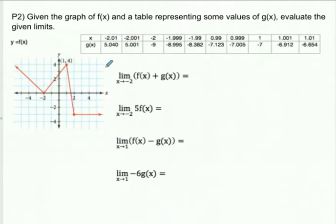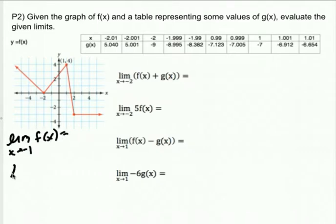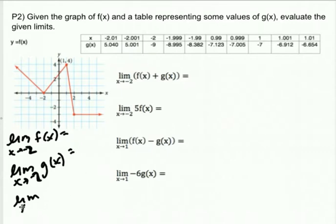Same idea for the next example — you can pause me if you want. The two values we're approaching are negative two and one. If you find those four limits — F and G at both negative two and one — you should be able to answer all the questions quickly. So find the limit as X approaches negative two from the graph and from the table, and the limit as X approaches one from the graph and from the table.